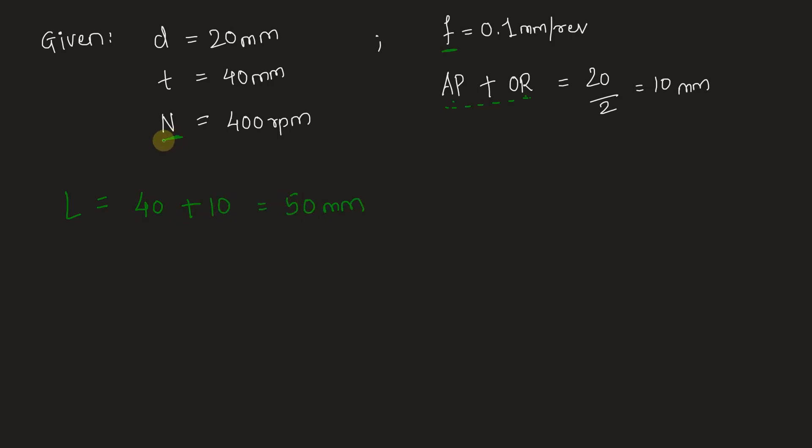Speed of the drill is given in terms of revolutions per minute, and feed rate, that is the advancement of the drill, is 0.1 millimeter per revolution. We can find out the translational speed of the drill, let that be V. It will be f times N, which will be in millimeters per minute. That is 0.1 times 400, which equals 40 millimeters per minute.